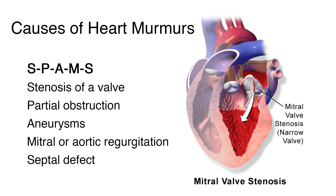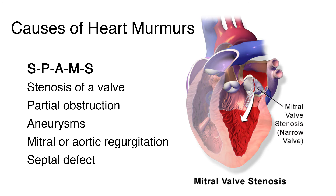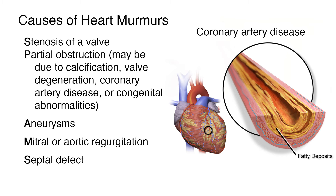You can remember the various causes of heart murmurs by remembering SPAMS. S for stenosis, or narrowing of a valve. P for partial obstruction, which may be due to calcification, valve degeneration, coronary artery disease, or congenital abnormalities. A for aneurysms, in which an area of the aorta has become weak and enlarged.